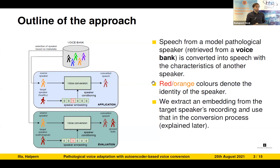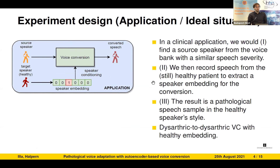The key idea is that there is a voice bank where a speech sample — already a pathological speech sample — is converted into pathological speech in a different speaking style, using an autoencoder-based approach by extraction of speaker embeddings. In the ideal clinical application, we would find a source speaker with similar speech severity, ask a healthy speaker to provide a recording, extract the speaker embedding from that recording, and use it with the source speaker material to perform conversion, resulting in a pathological speech sample in the healthy speaker's style.